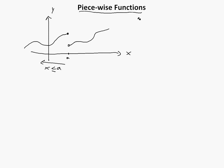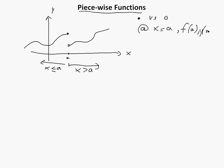I'll show you what a filled-in circle versus a not-filled-in circle means. So you've got this versus this. The filled circle means that at x equals a, f(a) equals whatever this point is. So when x equals a, that's why the equal sign is there — and when there isn't one, we use the other curve. Basically all we're doing is breaking it up into two curves.